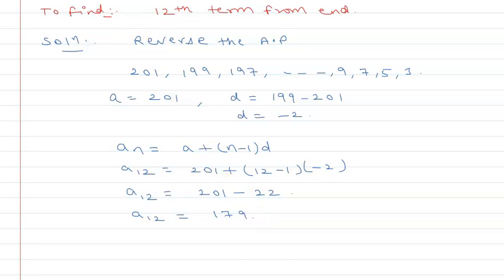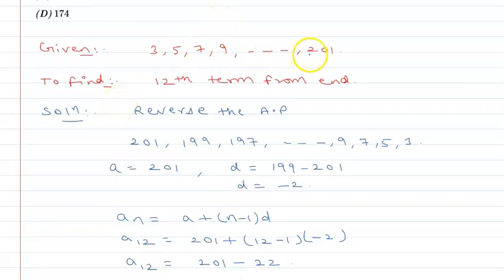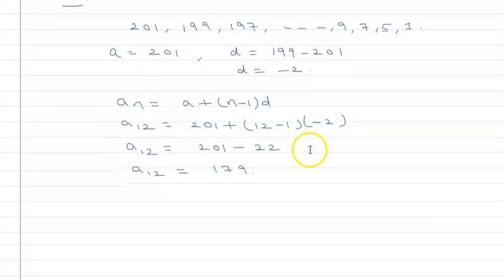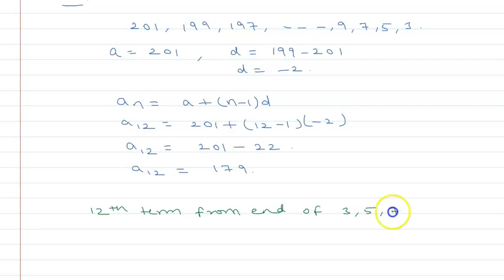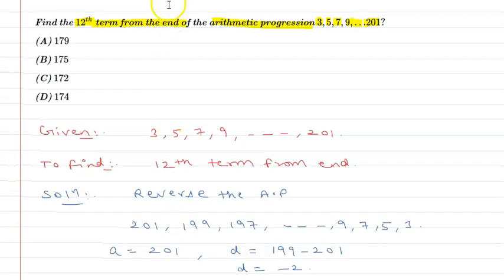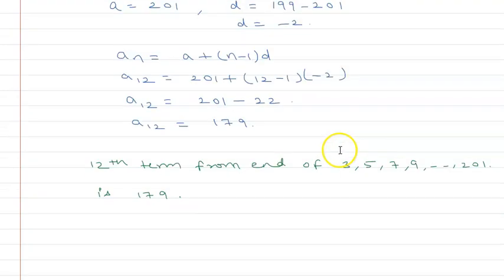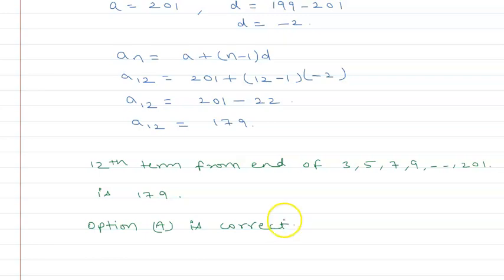Now, since this is from our reversed AP, it corresponds to the 12th term from the end of the original AP. So the 12th term from the end of 3, 5, 7, 9, and so on up to 201 is 179. I hope you understand. Thank you.